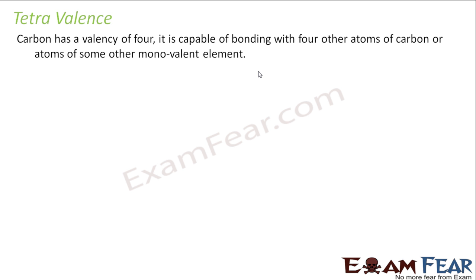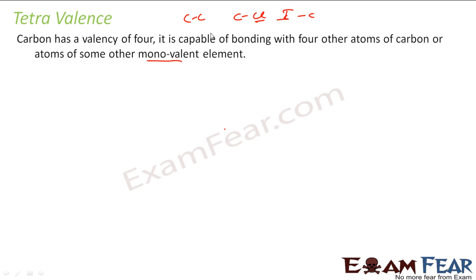Carbon has a valency of four. It is capable of bonding with four other atoms of carbon or any other monovalent element. For example, chlorine and iodine are monovalent elements. Carbon has a tendency to form bonds with carbon, chlorine, or iodine — and it can bond with four others. One carbon can bond with four carbons or four chlorines, or one chlorine and three carbons, and so on. So it can pair in a sorted way: all chlorine, all carbon, or a mix of chlorine and carbon.